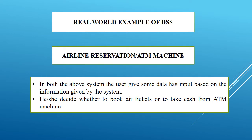Some real-world examples of DSS include the ATM machine and airline reservation systems. In these systems, we provide some input data, and the system gives back information. Based on that information, we decide whether to book a ticket or withdraw cash from an ATM machine.